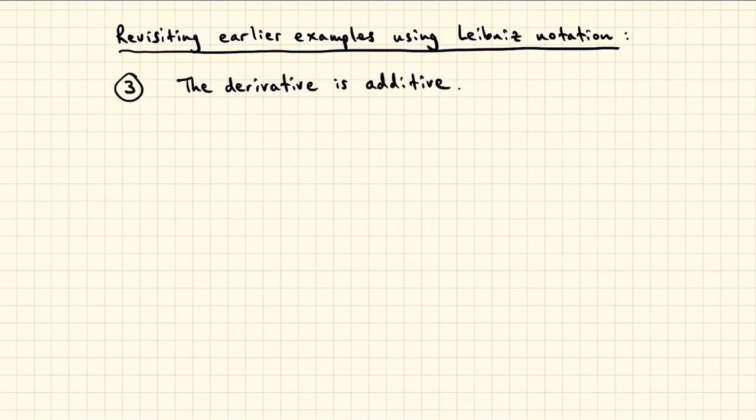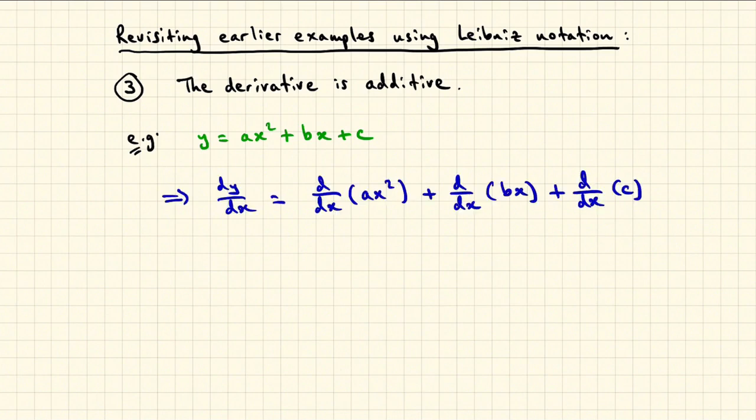We have noted previously that the derivative is additive, which means that the derivative of a sum is the sum of the derivatives. For example, if y is a quadratic function in x, say ax squared plus bx plus c, where a, b and c are constants,